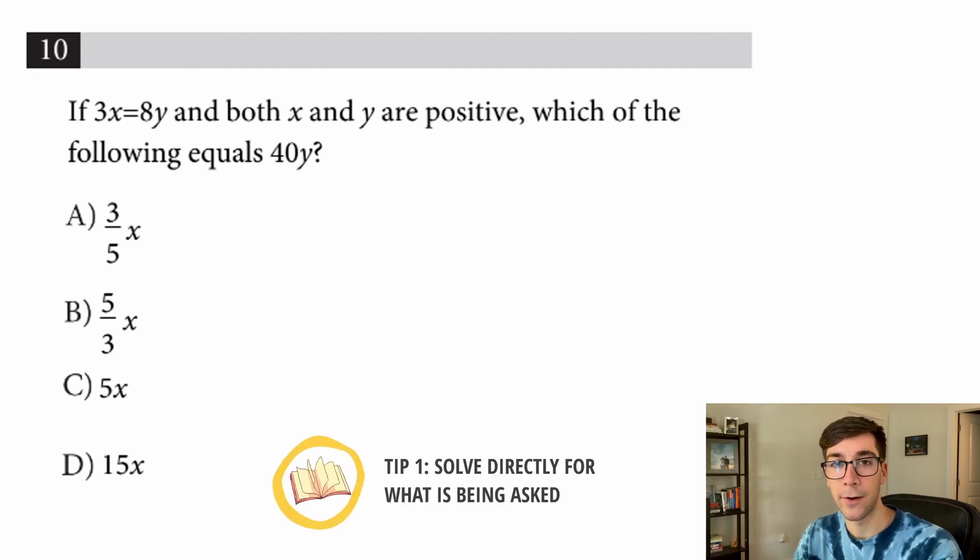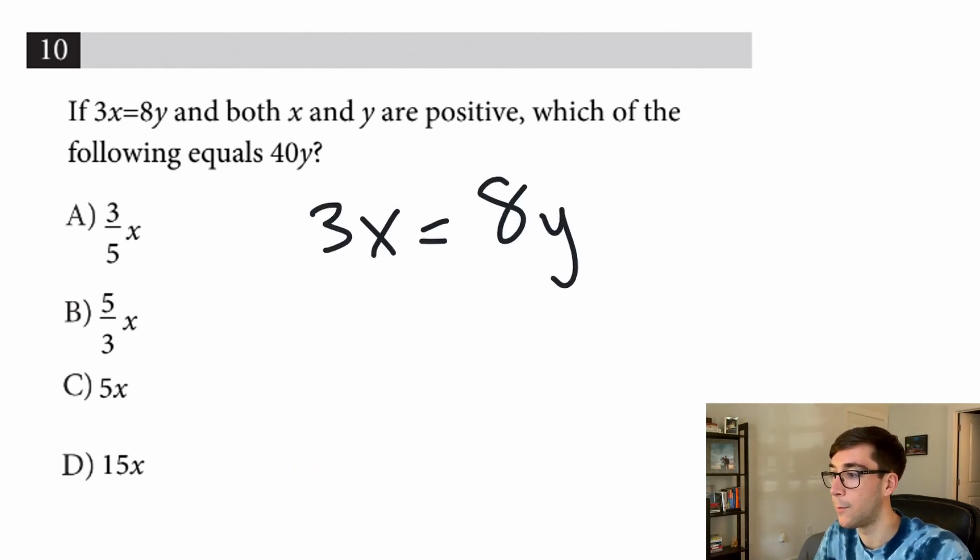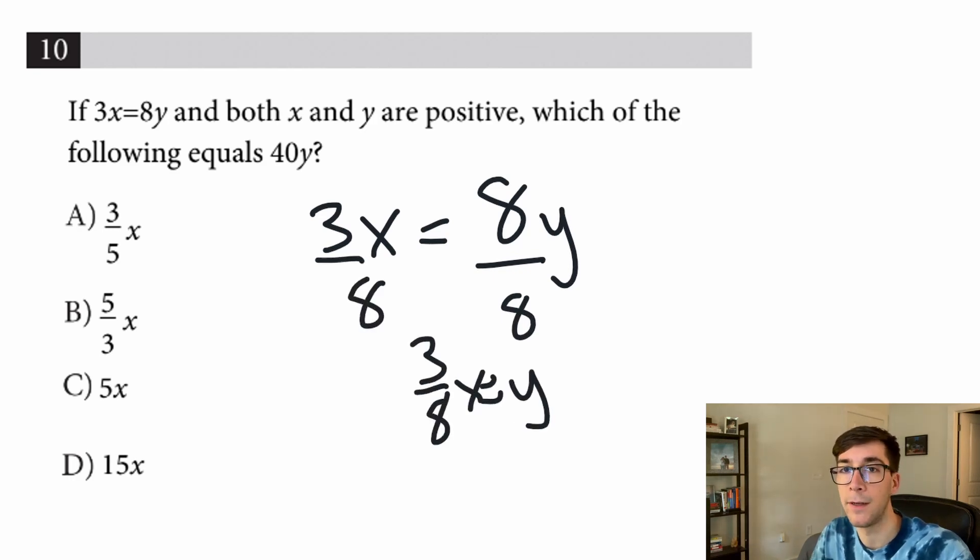Tip number one is to solve directly for what they're asking for. This problem says if 3x equals 8y and both x and y are positive, which of the following equals 40y? You may be tempted to solve for y, divide by 8, divide by 8, get y equals 3/8 x, and then multiply by 40.